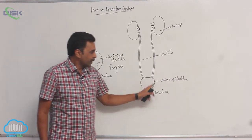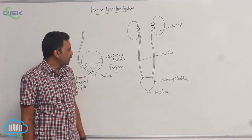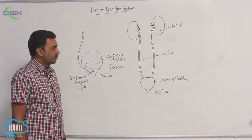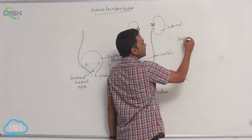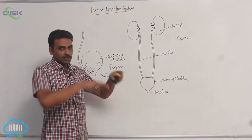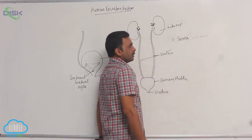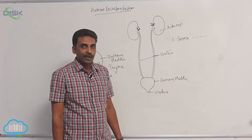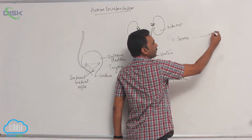Now, observing the wall of the urinary bladder: the wall contains three layers. The outermost layer is the serosa. The serosa is nothing but serous epithelium, or visceral peritoneum.